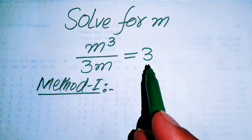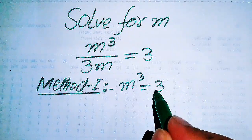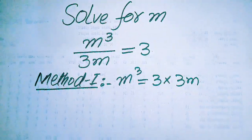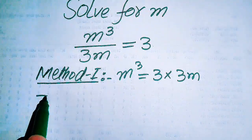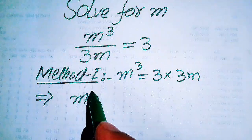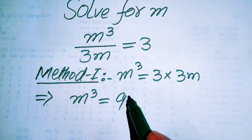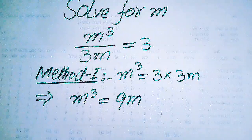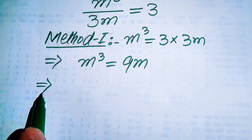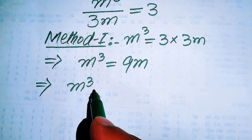In the first method, when we move 3m to the right hand side it is multiplied, and it will be written as m cubed is equals to 3 multiplied by 3m. In the right hand side, 3 times 3m becomes 9m. Now we move all variable terms to the left hand side, giving us m cubed minus 9m.